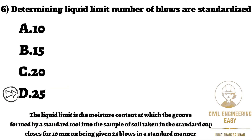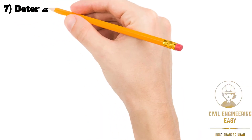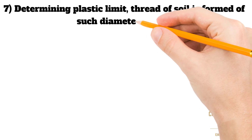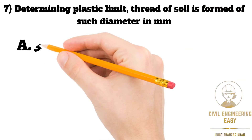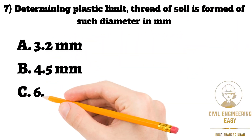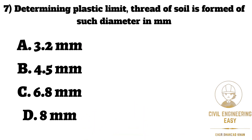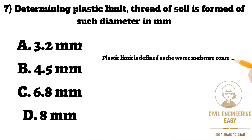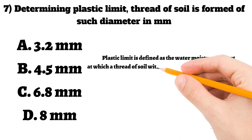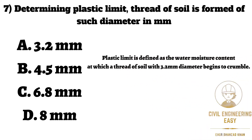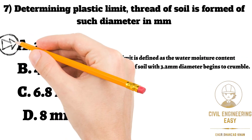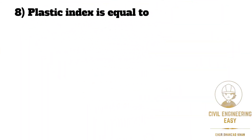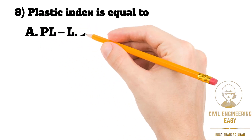The correct option is 25 number of blows. In MCQ number seven, for determining the plastic limit, the thread of soil is formed of such diameter in mm — options are 3.2 mm, 4.5 mm, 6.8 mm, and 8 mm. Plastic limit is defined as the moisture content at which a thread of soil with 3.2 mm diameter begins to crumble. So the correct option is 3.2 mm.